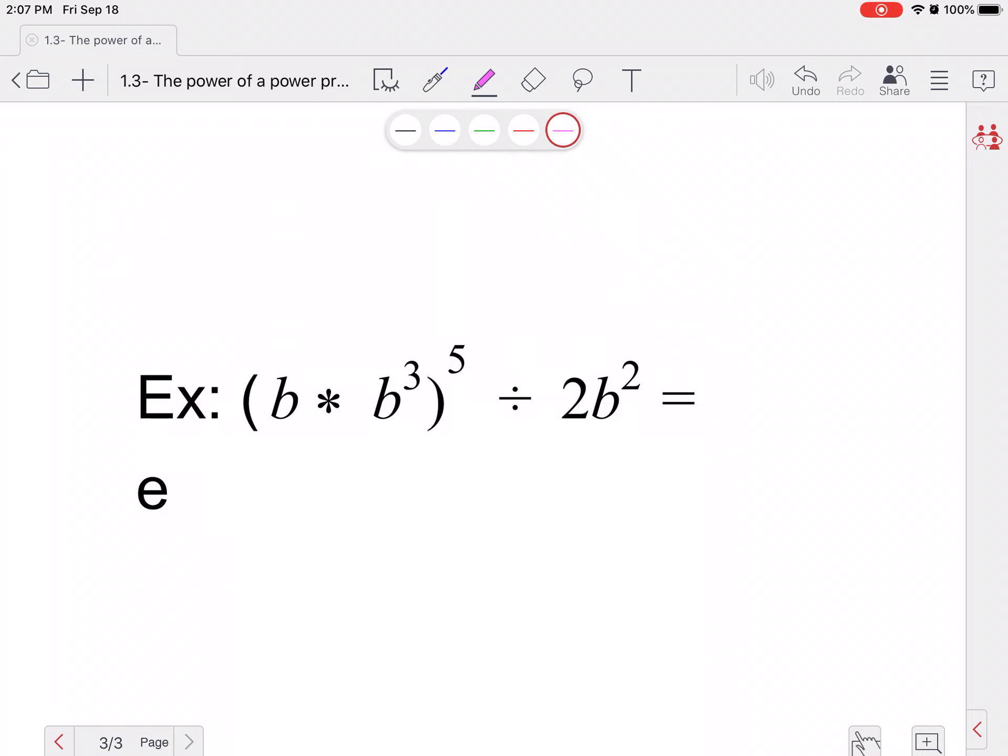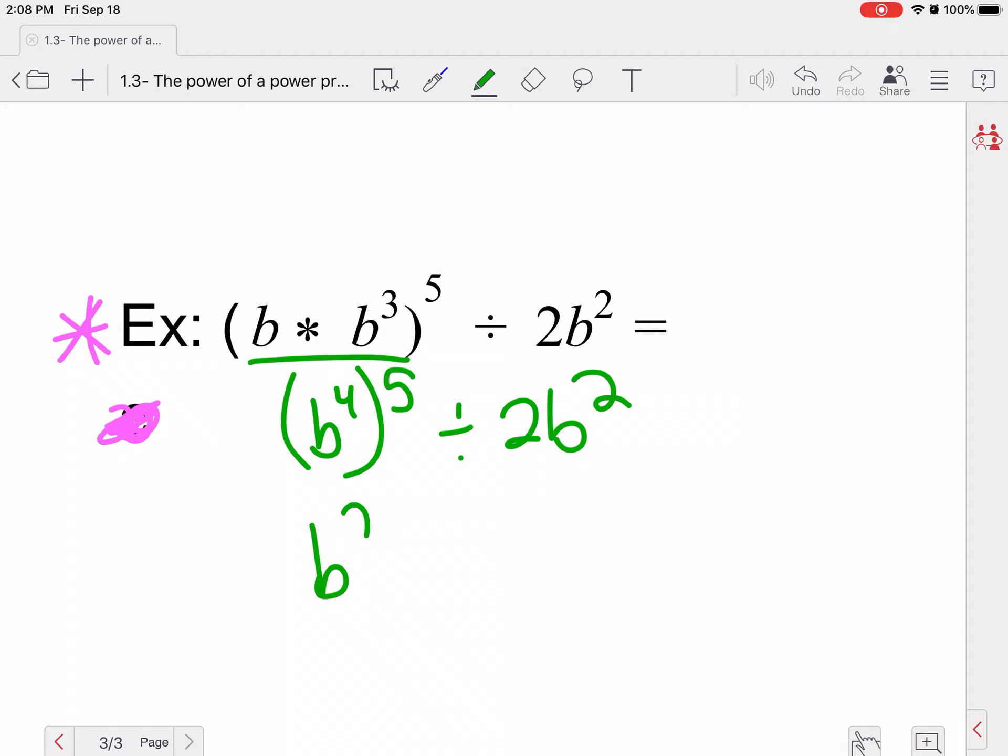Go ahead and try this one. Ignore this weird E thing there. I'm not really sure what that's about. So again, I'm going to deal with the inside parentheses here. So I'd have B times B cubed would be B to the fourth all to the fifth divided by two B squared. B to the fourth to the fifth would give me B to the 20th divided by two B squared.